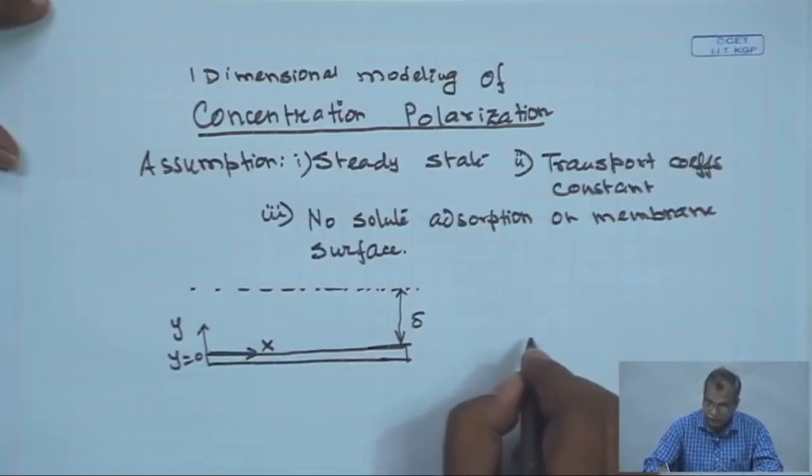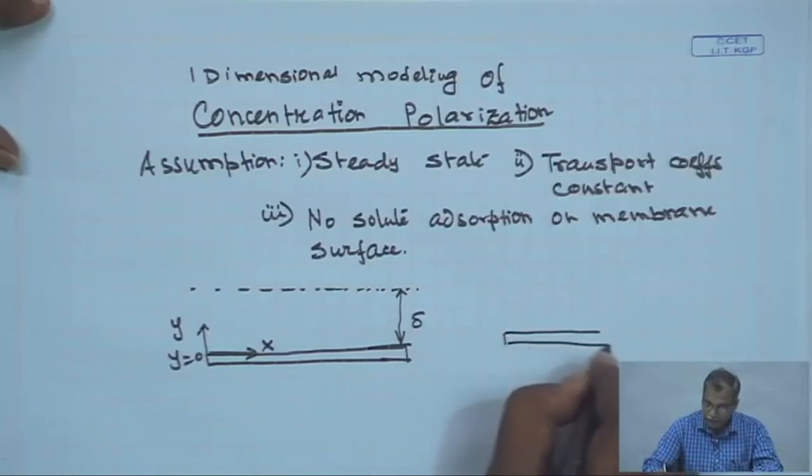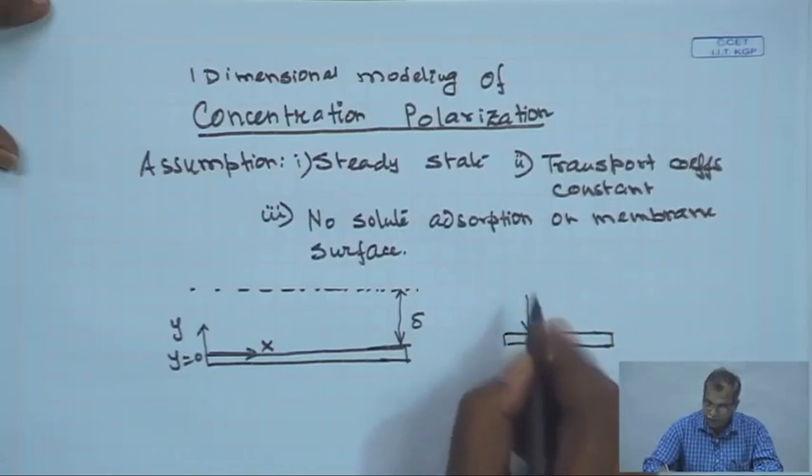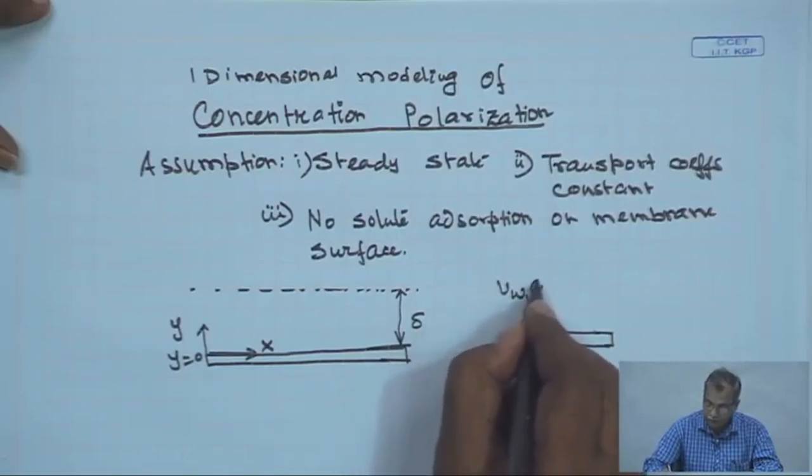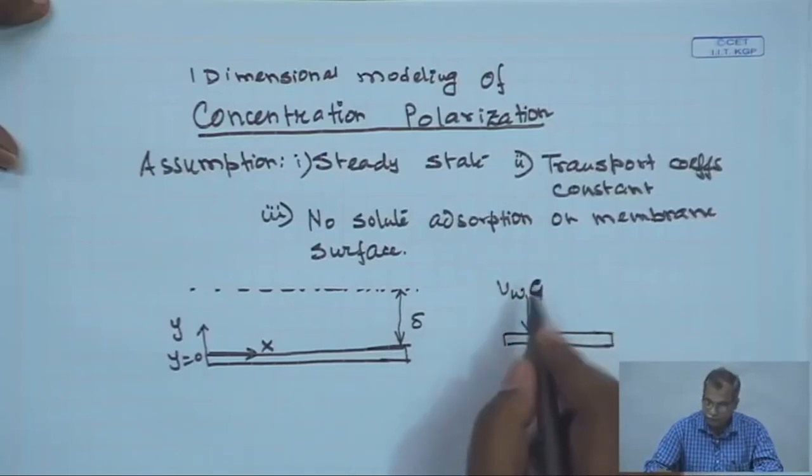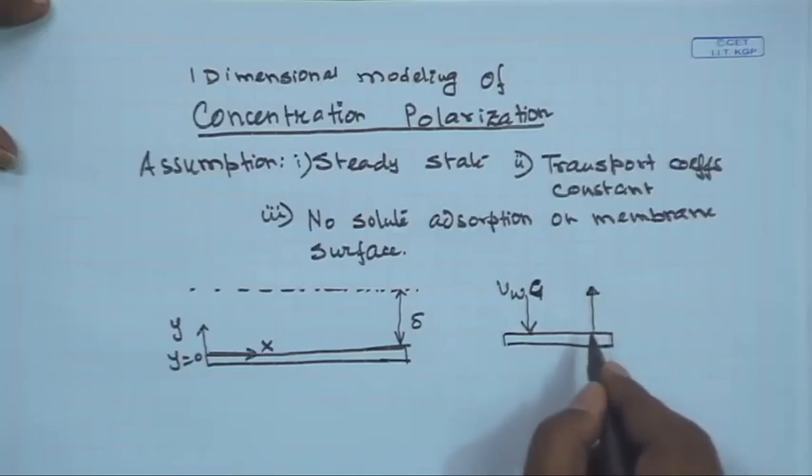Let us write down the solute fluxes appearing at the membrane surface. The convective flux toward the membrane is Vw·c — solvent flows toward the membrane due to applied pressure, dragging solute with it. There will be a backward diffusion from the membrane surface to the bulk, because solute deposited on the membrane surface raises its concentration above bulk concentration, giving a flux of −D·dc/dy. Solute leaving through the permeate gives a flux Vw·cp.